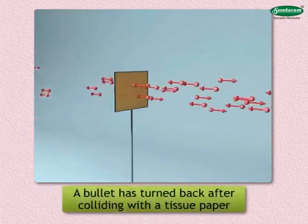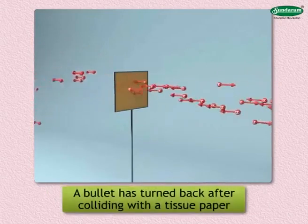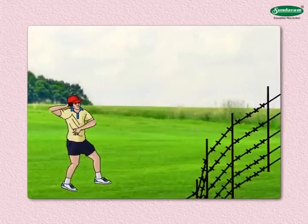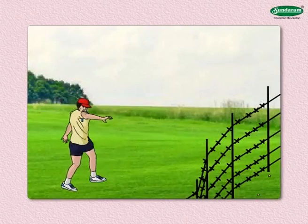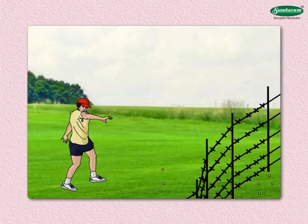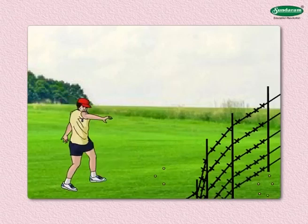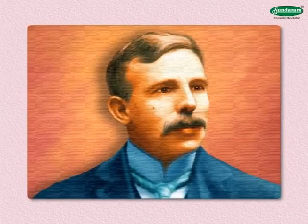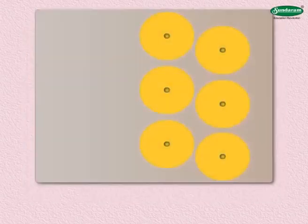However, a few alpha rays turned back from the sheet. Rutherford found this remarkable — for him it was as miraculous as if a bullet had turned back after colliding with tissue paper. To understand this, consider the following activity: stand near a barbed wire fence and throw marbles towards it. A majority of the marbles will pass right through the fence to the other side, but just a few will hit the wire and return.